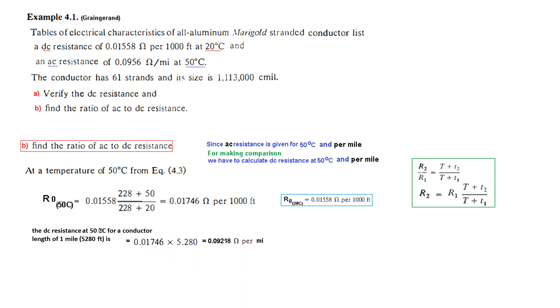We have to calculate this in per mile. So we know one mile has 5,280 feet. Therefore we multiply this by 5.280. This is the value we are getting for 50 degrees centigrade and per mile, and now we can compare the two.